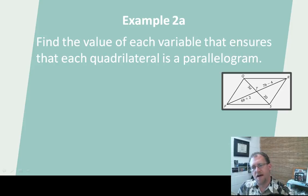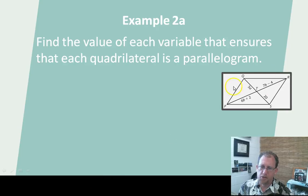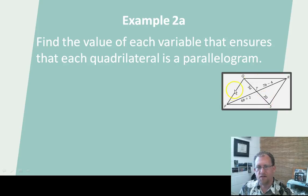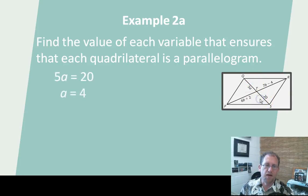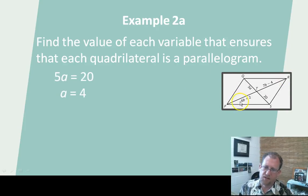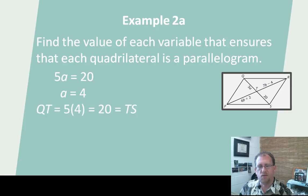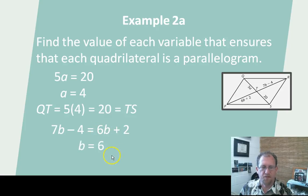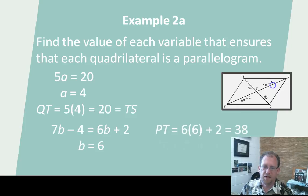Let's look at another example. I want to determine the variable values that would show that this is in fact a parallelogram. If I want to show this is a parallelogram and I know that one half-diagonal is 5a and the other is 20, I need these two things to be congruent because in a parallelogram the diagonals are bisected. So 5a equals 20, meaning a would need to be 4. Same thing over here — for the other diagonal, 6b plus 2 has to equal 7b minus 4. Solving that gives b equals 6, and then I can plug that back in and get the actual dimensions of PT and TR.